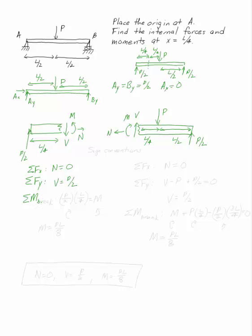And the sum of the moments at the break, I'm going to take the sum of the moments at the break there so that I can eliminate both V and N from my sum of the moments. I have P over 2 acting at a distance of L over 4 clockwise, and I have M acting counterclockwise, so I can say that M has to be equal to PL over 8.